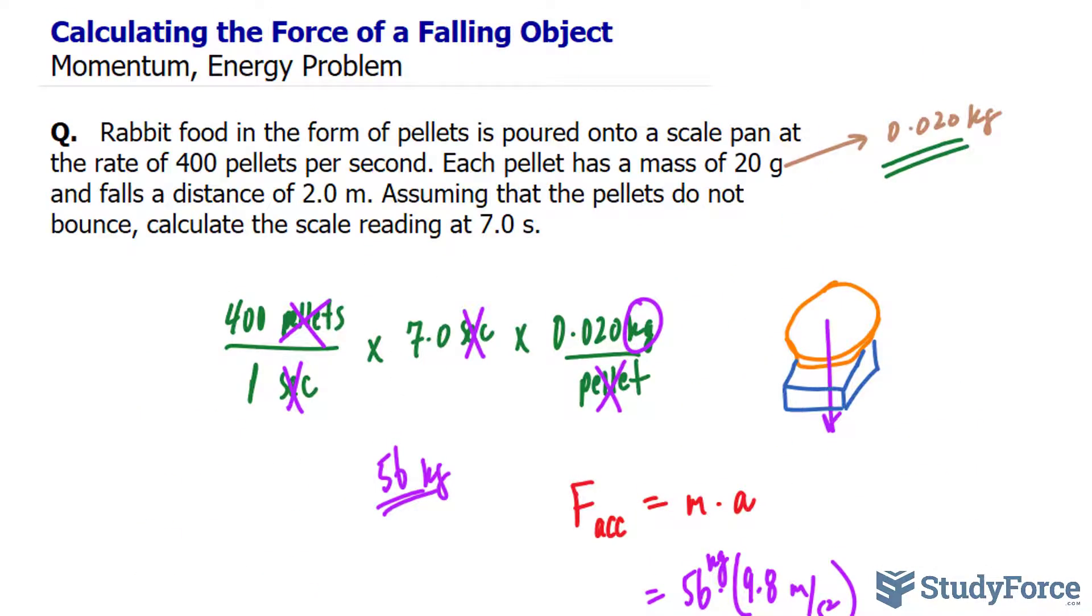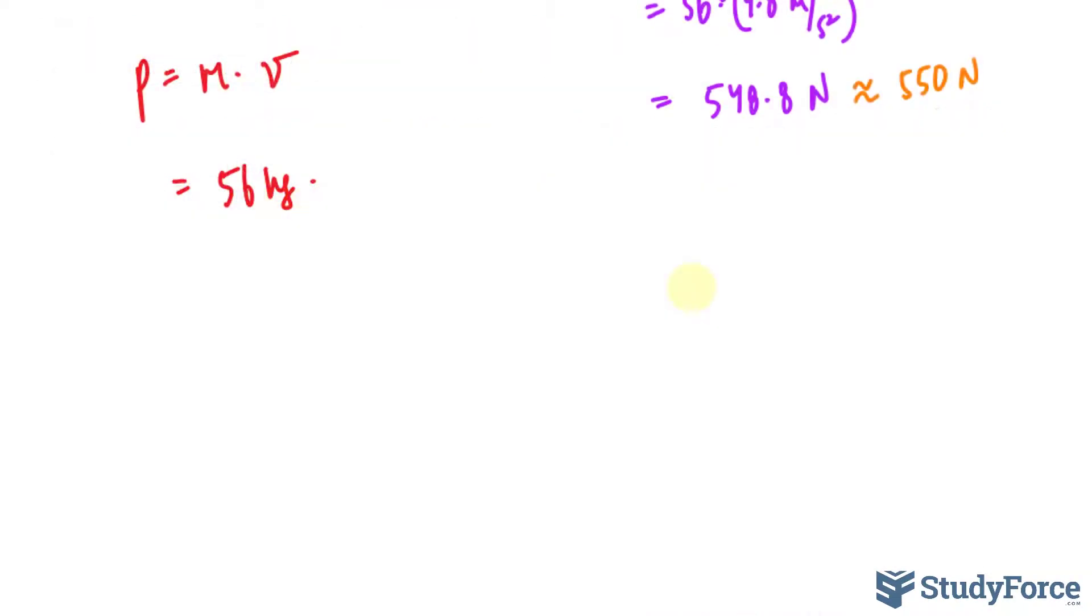We know the mass already, it's 56 kilograms. All we need to know is the velocity. And for that, what we can do is use the other piece of information given, which is the distance that these pellets fall, which is 2 meters.